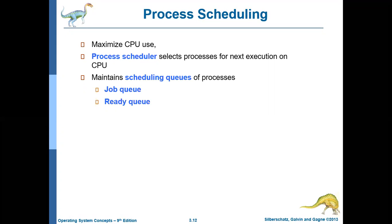The third type of queue is called the device queue. If any process is waiting for any IO device like a hard disk or printer, then these processes will be in the device queues. For example, if process P1 wants to access the hard disk but it is already being accessed by process P2, then P1 must wait in the device queue.